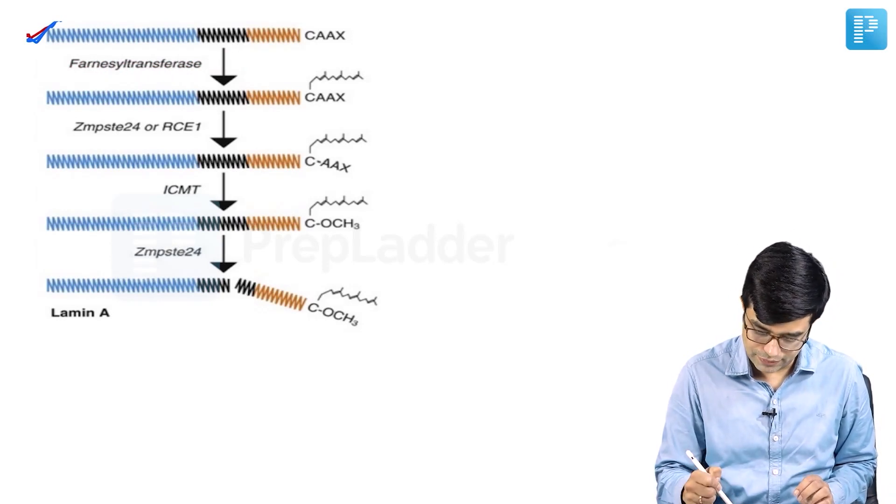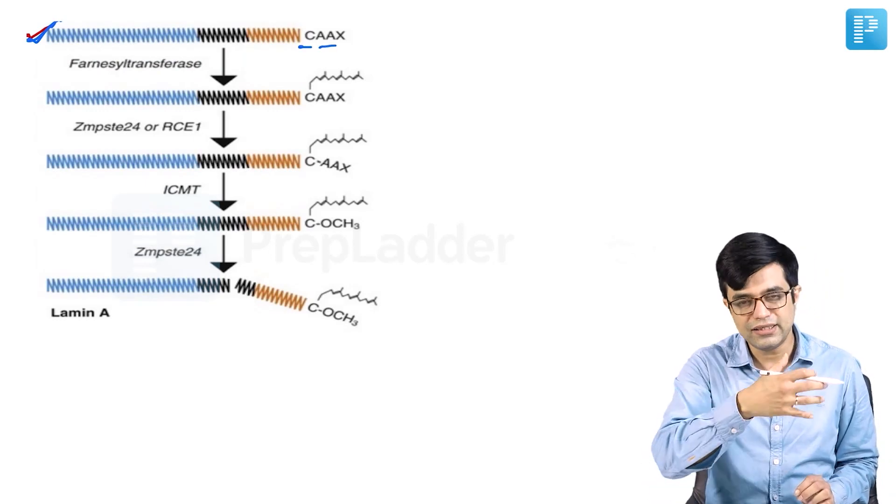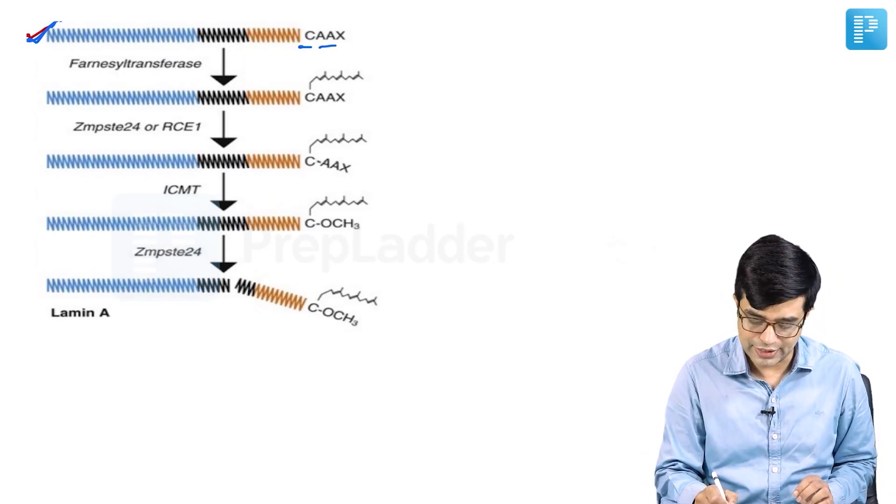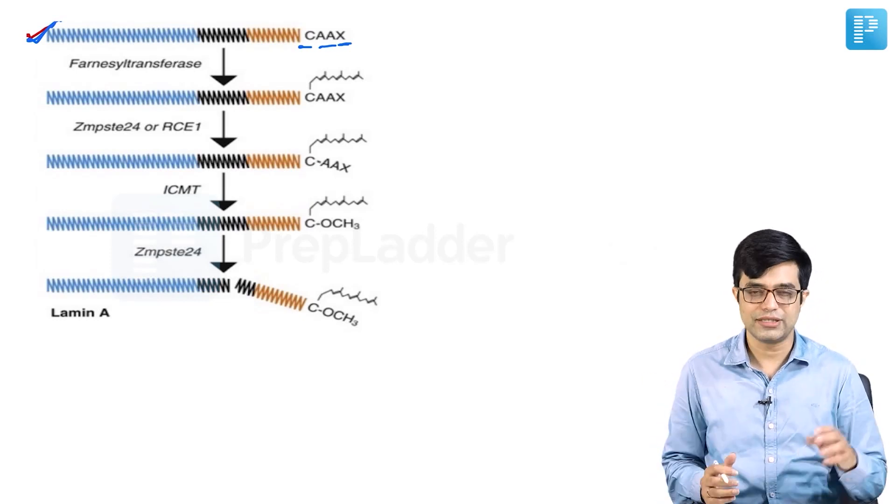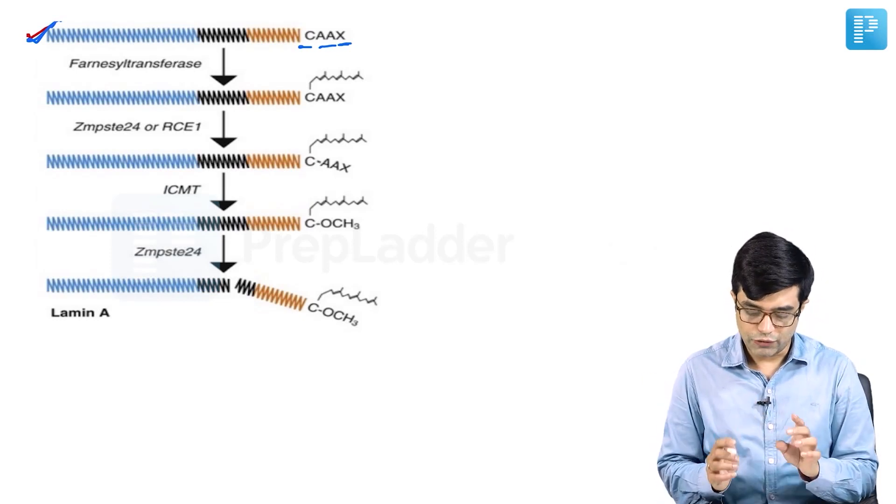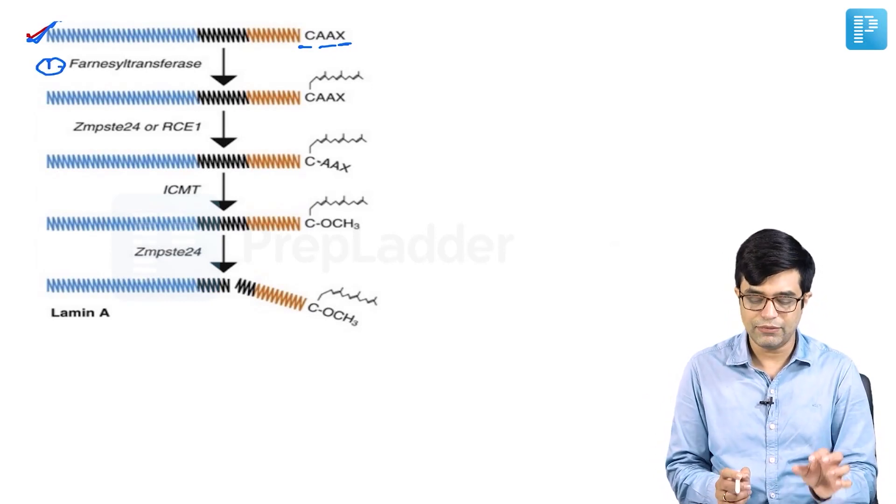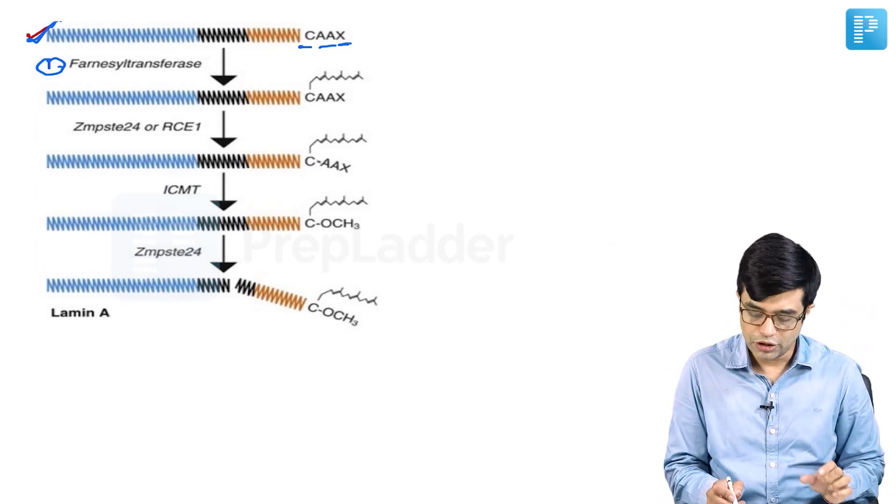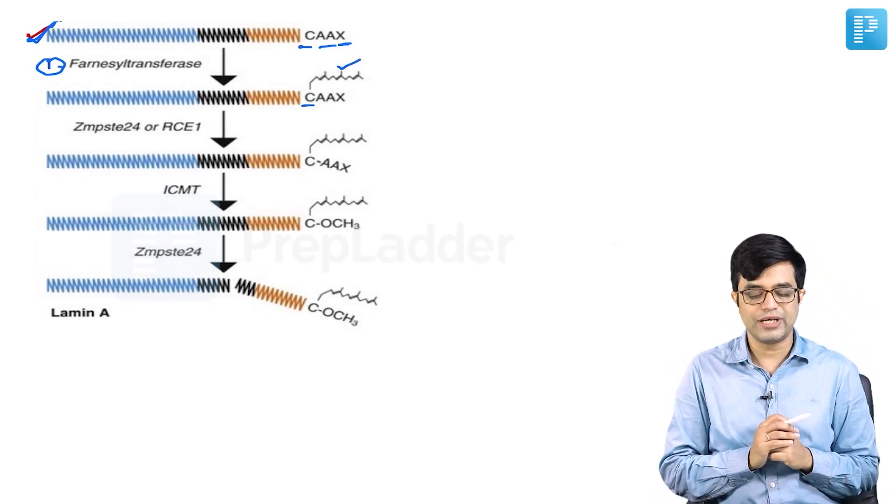C stands for cysteine. AA stands for amino acid, any amino acid can be present, and X is a variable chain. Usually AA stands for aliphatic amino acid. Farnesyl transferase enzyme attaches a farnesyl group to the cysteine molecule. Can you see this farnesyl molecule has been attached here?